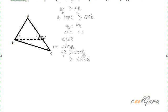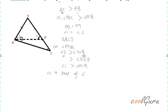Also, angle 2 is equal to angle 1. So, in place of angle 2, I can write angle 1. What we get is: angle 1 is greater than angle ACB. But this angle 1 is part of angle ABC. Therefore, ABC is also greater than angle ACB.